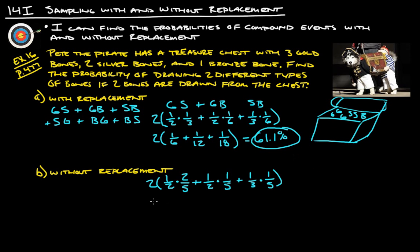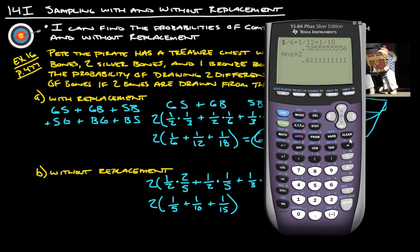So we calculate: one-half times two-fifths is two-tenths, which reduces to one-fifth. One-half times one-fifth is one-tenth. One-third times one-fifth is one-fifteenth. Adding those: one divided by five plus one divided by ten plus one divided by fifteen gives 36.6%. We double that and get 73.3%.